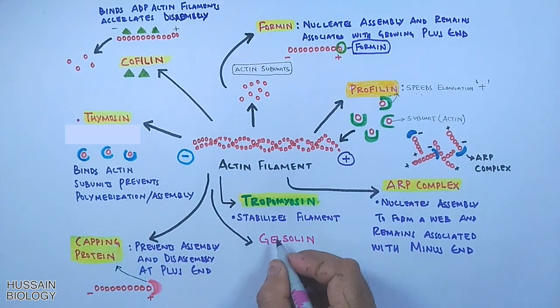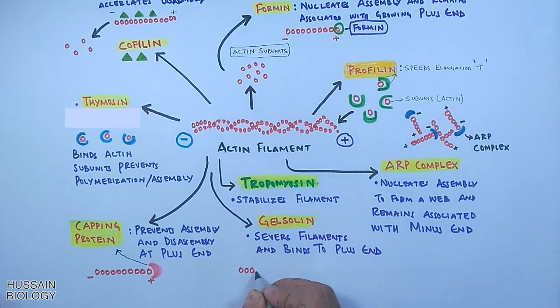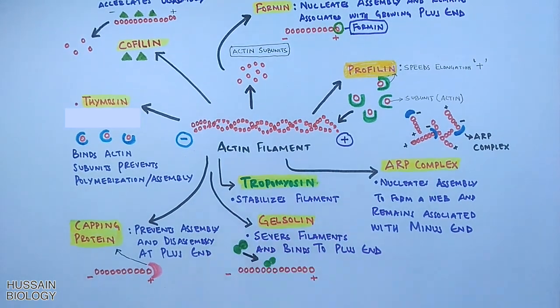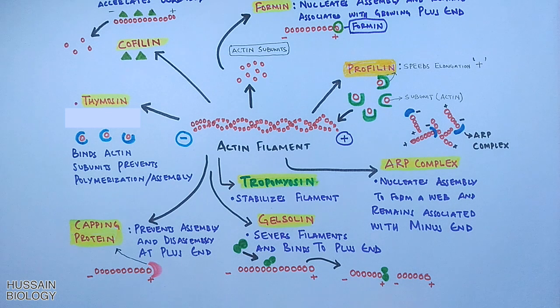And then we have gelsolin. It severs the filament and binds to the plus end of the filament, as shown in the diagram. So gelsolin breaks the filament into two or multiple parts.